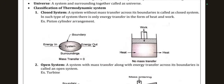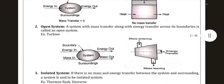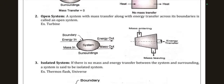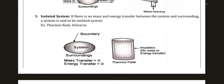There are three classifications of thermodynamic systems: closed system, open system, and isolated system. In a closed system, there is no mass transfer across its boundaries — only energy transfer in the form of heat and work. Example: piston-cylinder arrangement. In an open system, both mass and energy transfer occur across boundaries. Example: turbine. In an isolated system, there is no mass or energy transfer. Example: thermos flask and the universe.